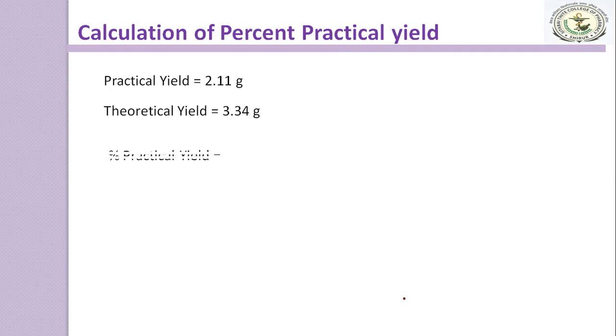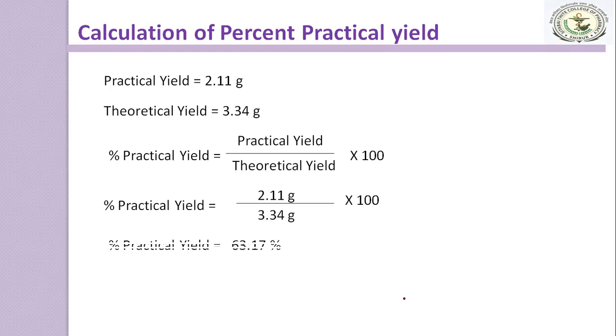Then calculate the percent practical yield using the formula: practical yield divided by theoretical yield multiplied by 100. Just put the values and you will get the percent practical yield, here it is 63.17%.